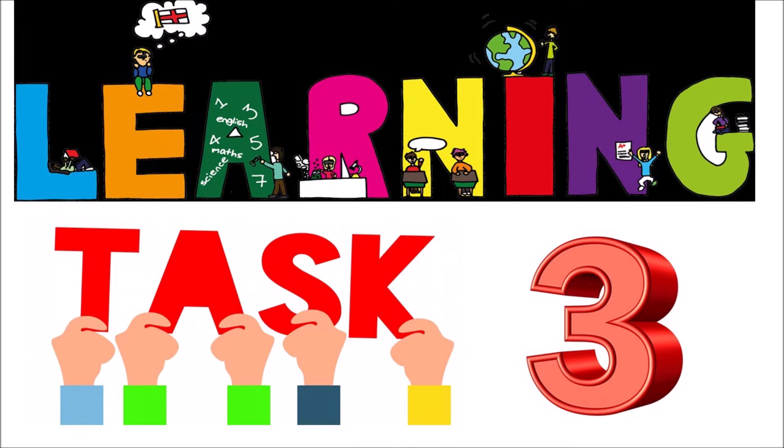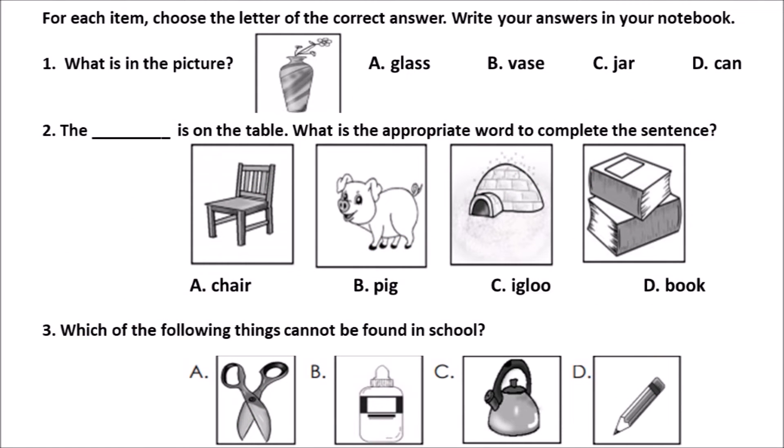We are now in Learning Task Number 3. For each item, choose the letter of the correct answer. Write your answers in your notebook. Number one: What is in the picture? Number two: The blank is on the table. Number three: Which of the following things cannot be found in school?